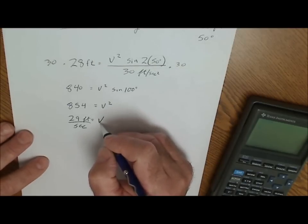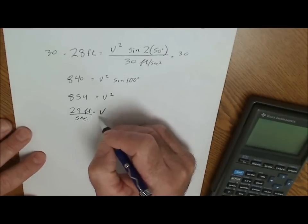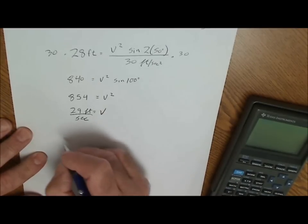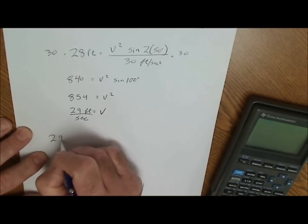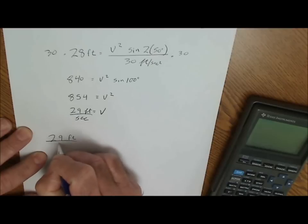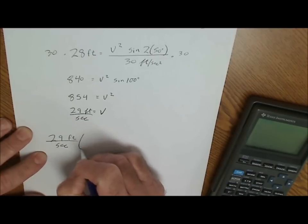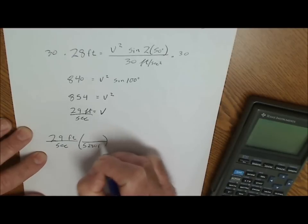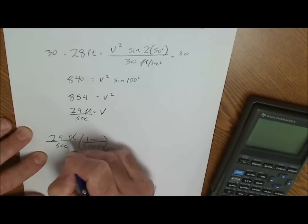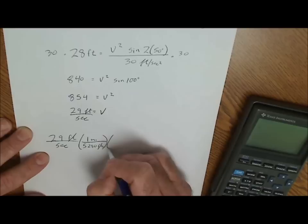I could convert that to miles per hour to get a feel for how fast that is. So my velocity is 29 feet per second. I take that. I want miles per hour. There are 5,280 feet in one mile. My feet cancel. It gives me miles per second.